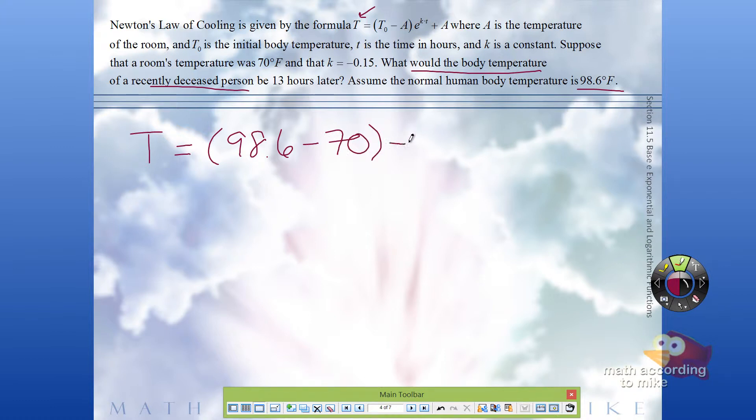Times e. Again, e is not a variable, e is the number e to the k. We're told that k is negative 0.15 times t. We're told t is 13 hours later, plus add back in the ambient temperature of the room.